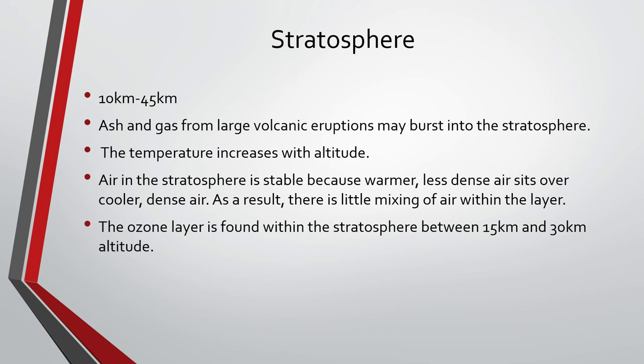The stratosphere is about 10 kilometers to 45 kilometers. That's where ash and gas from large volcanic eruptions often get trapped, and they can stay there for years because there is very little mixing between layers of the atmosphere. Pilots tend to fly in the lower sections of the stratosphere because there is less turbulence there. The temperature increases with altitude, and the direct source of heat for the stratosphere is the sun. The air in the stratosphere is stable because warmer, less dense air sits over cooler, dense air. As a result, there's little mixing within the layer.